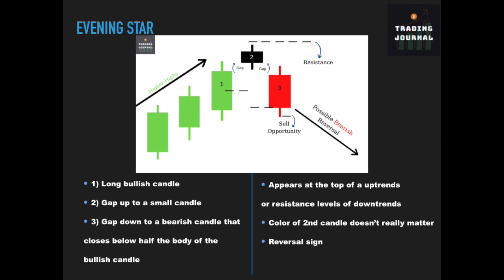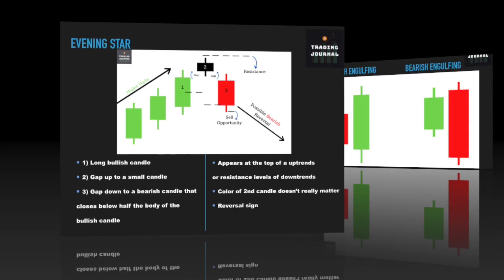The opposite version of the morning star is the evening star. The evening star appears at resistance levels of downtrends or at the top of uptrends. It also has three candlesticks that begin with a bullish candle, followed by an indecision candle, followed by a bearish one. The second candle's color does not matter — it can also be a doji candle. There must be a price gap between the first and second candle, and also between the second and third candle. The third candle should close below half the body of the bullish candle. This pattern tells us that bears are getting stronger and a reversal is most likely.